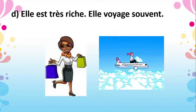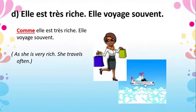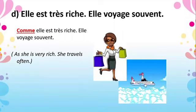Look at D: 'Elle est très riche' — she is very rich. She travels often. So you can combine these two sentences with the help of comme: 'Comme elle est très riche, elle voyage souvent' — as she is very rich, she travels often. You can combine these two sentences with the help of comme. Okay, children.